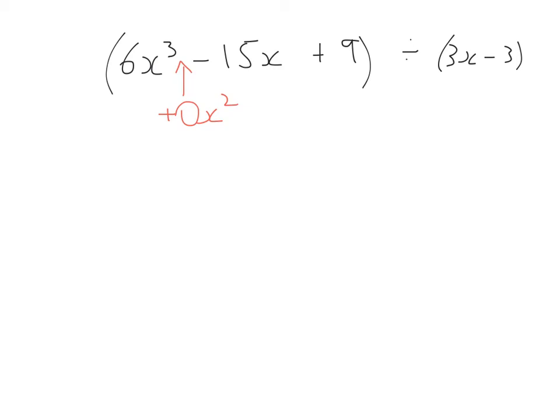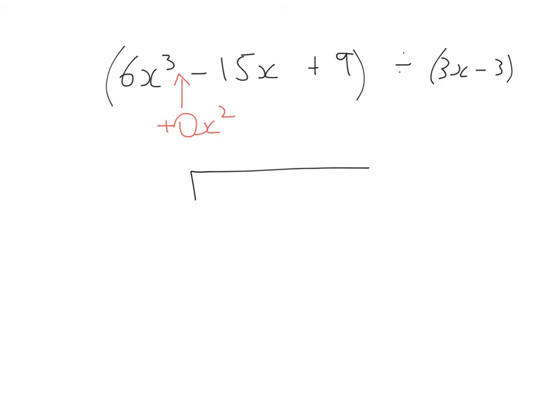So by making one of them a 0x², you'll be able to add the other x² onto it, if that makes sense. You'll see how it works now in a second. So when I'm writing this into my division sum, I write down 6x³ + 0x² - 15x + 9. And on the outside, I have 3x - 3. And we start off, as we always have, we say, what do you multiply 3x by to get 6x³? That's going to be 2x².